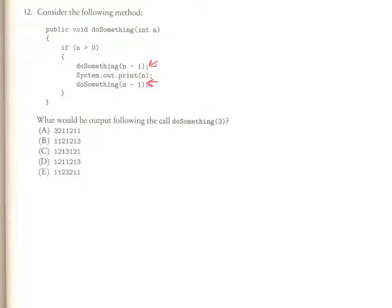Now, what I'm going to do is I'm going to walk through what happens when we call do something 3. So if we take a look at this, and I'm just going to abbreviate that as d3. So I'm going to call d3, and when I go into the top of my method, since n is greater than 0, I continue. And the next thing that I do is I call do something of 2.